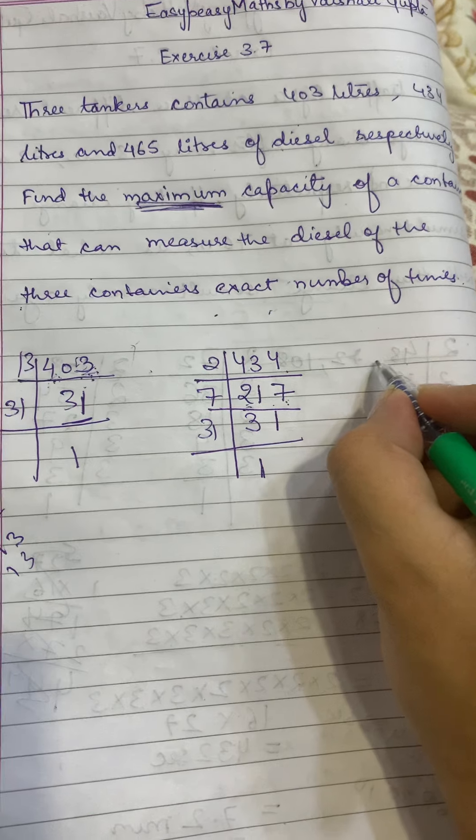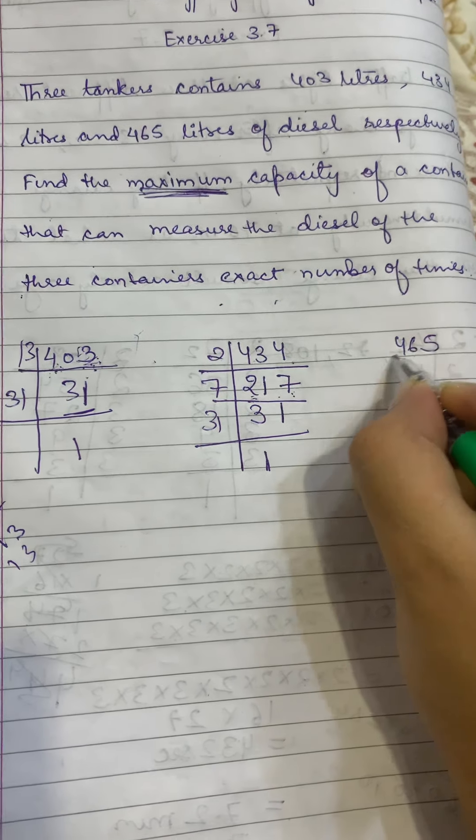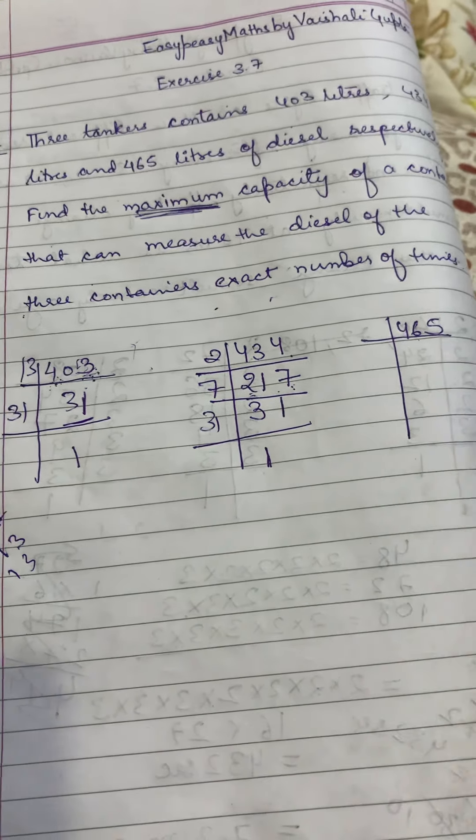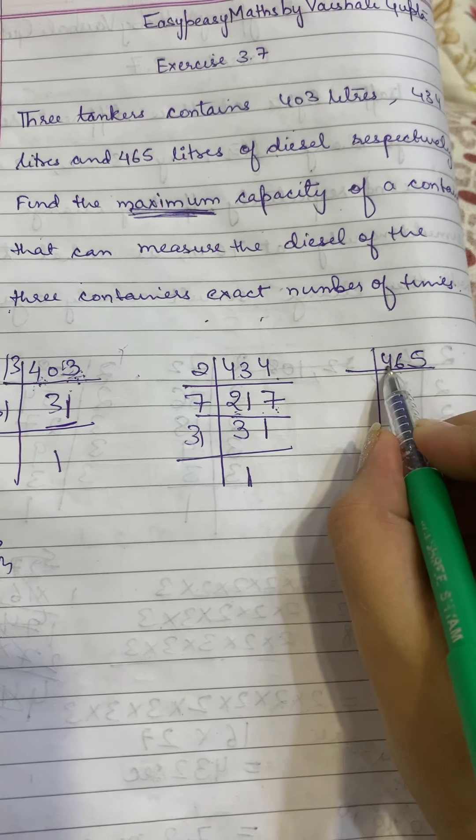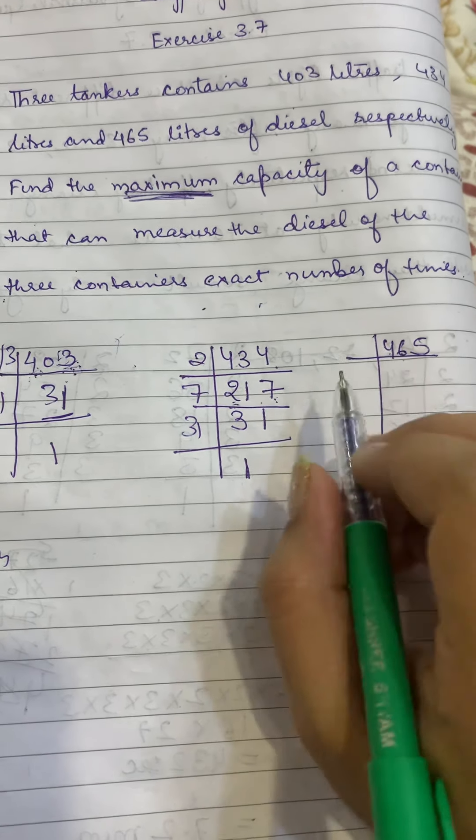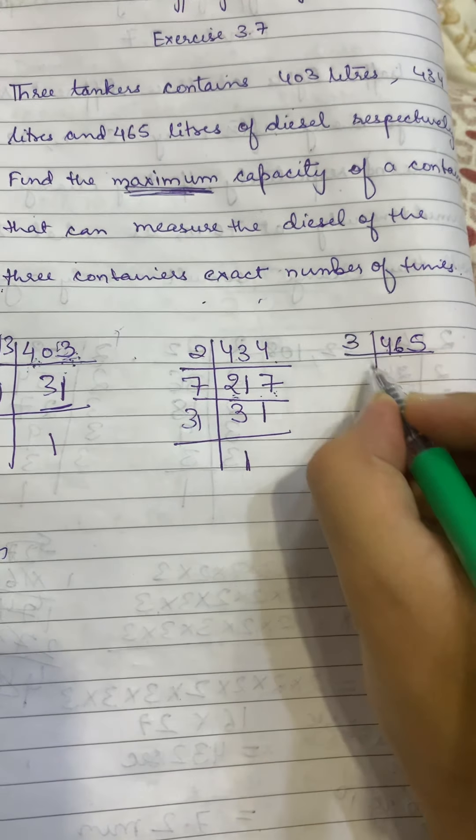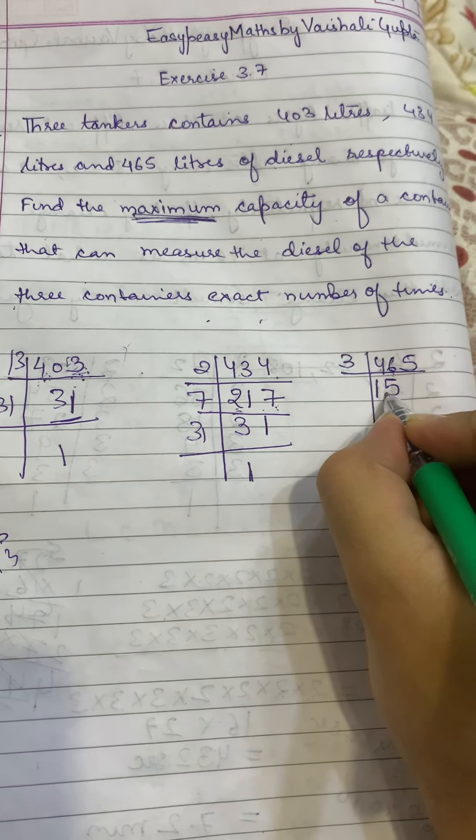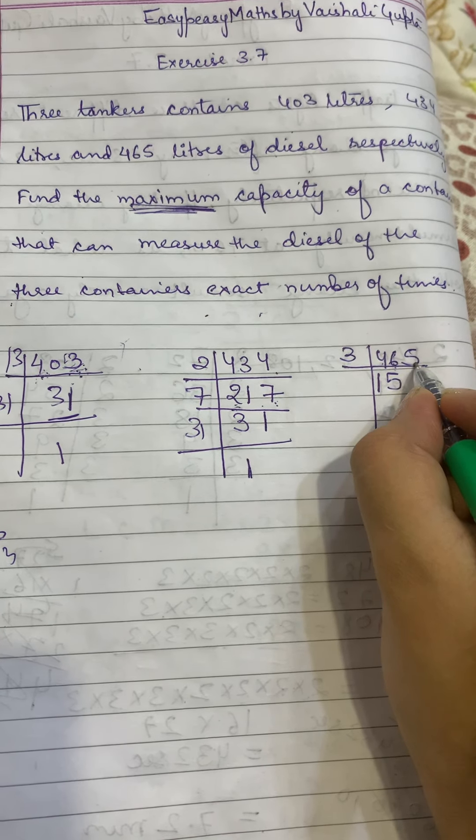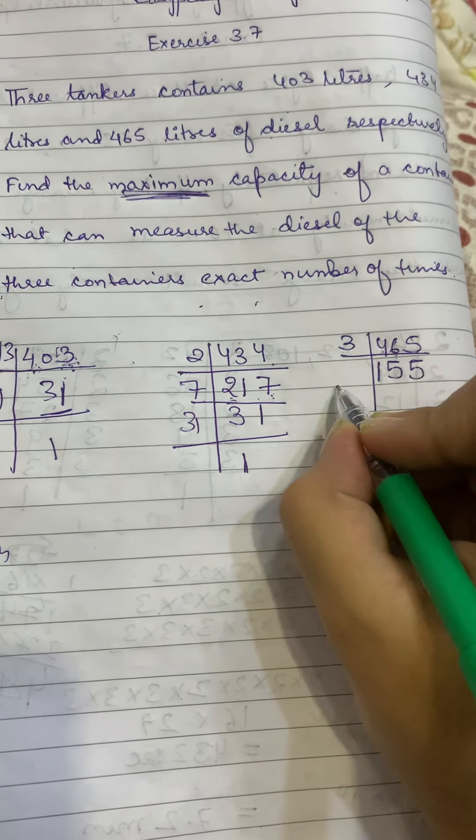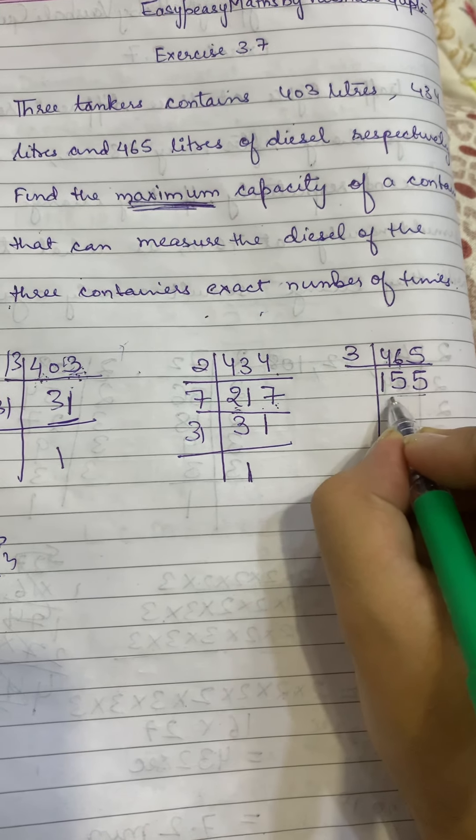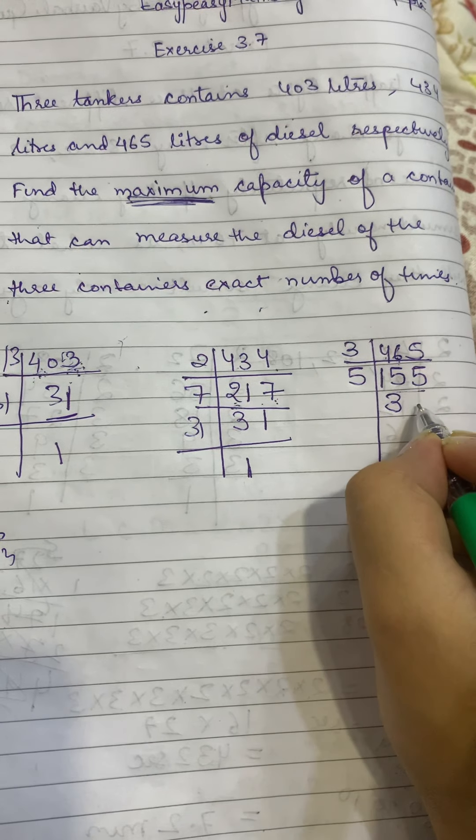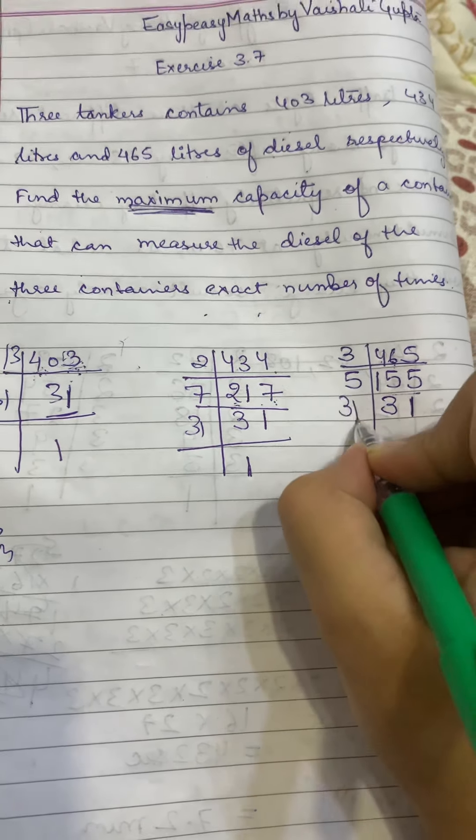Then next we will check 465. Obviously 2 is not going to go. 3 is check. 4 plus 5 is 9, 9 plus 6 is 15. 15 is divisible by 3, so 3 is going to go. 3 times 3, here is 16. 3 times 5 is 15. Then we know this is not going to go. Then 5 is check. 5 times 3 is 15 and 5 times 5. That is 31.